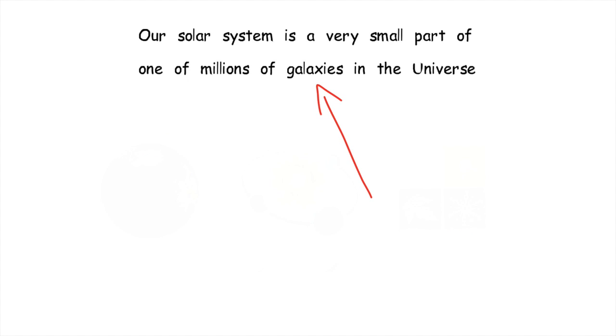The solar system is part of a galaxy of stars, one of many millions in the universe, enormous distances apart, and many of these stars also have planets.